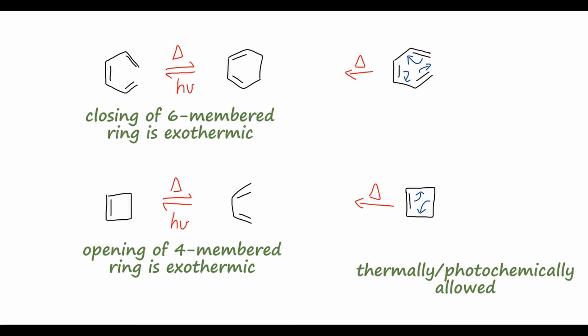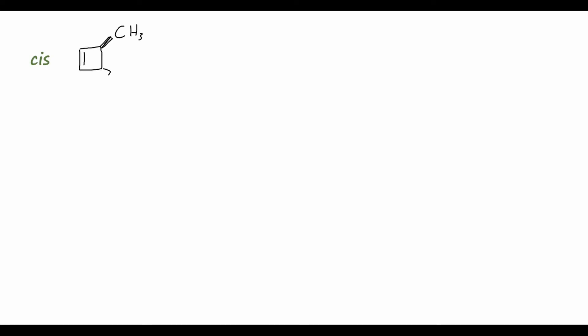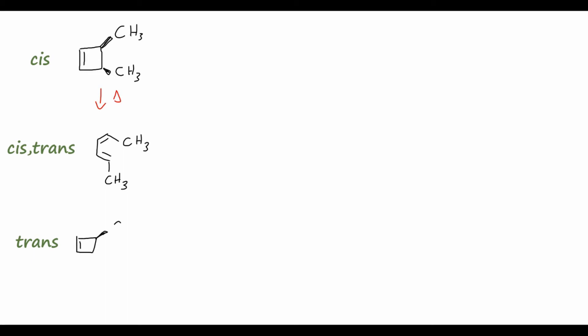The slightly more complex but also much more interesting facet of these reactions is their stereochemistry. If we consider a substituted cyclobutene where we have two methyl groups cis on the ring and expose this compound to heat, we know we'll end up with a butadiene variant — and these methyl groups will be arranged to give the cis-trans variant of the diene as a product. Conversely, if we start with the trans variant of the substituted cyclobutene and heat it, we end up with almost exclusively the trans-trans variant of the substituted butadiene.